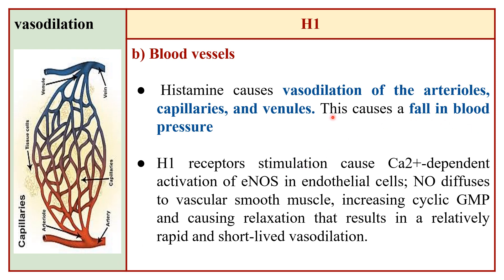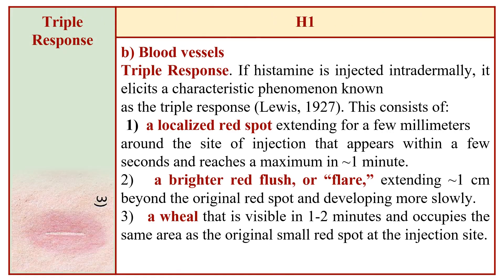Regarding H1 receptor effects on blood vessels, histamine causes vasodilation of arterioles, capillaries, and venules, causing a fall in blood pressure. H1 receptors stimulate calcium-dependent activation of endothelial nitric oxide synthase in endothelial cells, which releases nitric oxide that diffuses to vascular smooth muscles, increasing cyclic GMP and causing relaxation. This effect is rapid and short-lived vasodilation.